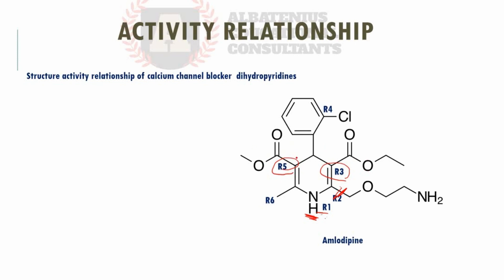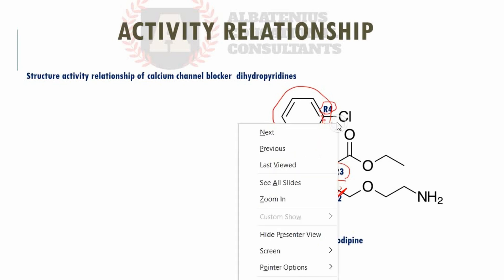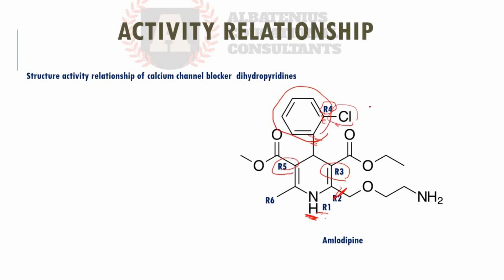The R4 position should be a phenyl ring. If it is mono-substituted, ortho substitution will make the product higher in activity versus other substitution positions. For example, adding a Cl at the ortho position gives more activity, while substitution at other positions results in less activity.